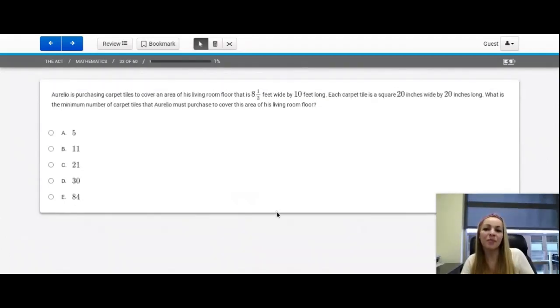Question number 33. Aurelio was purchasing carpet tiles to cover an area of his living room floor that is eight and one third feet wide by 10 feet long. Each carpet tile is a square 20 inches wide by 20 inches long. What is the minimum number of carpet tiles that Aurelio must purchase to cover this area of his living room floor? So we have a rectangular floor here that is eight and one third feet wide by 10 feet long. And notice that these are in feet and these are in inches.